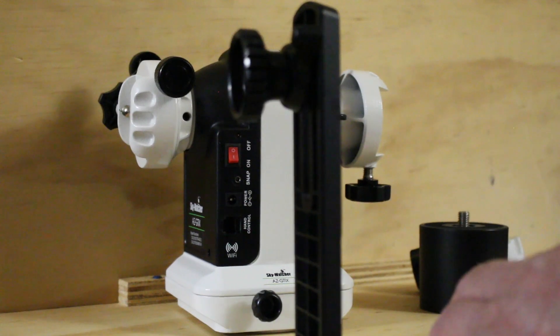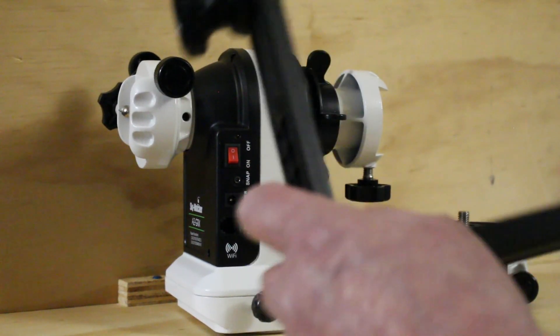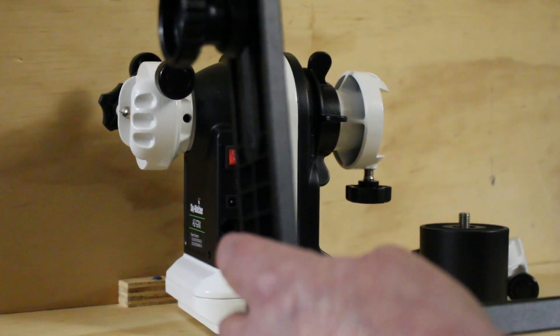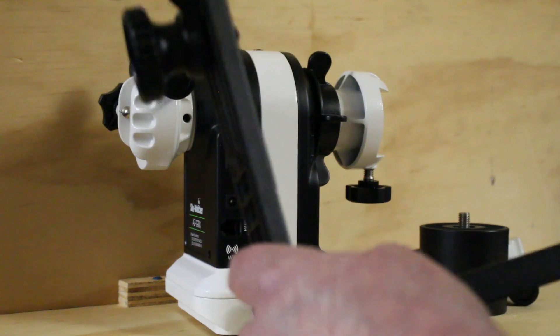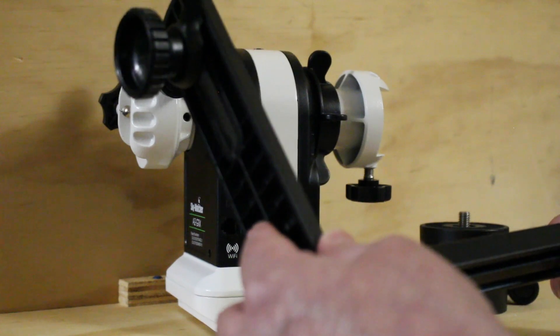But they don't tell you what size it is. This is a 45 millimeter Vixen style dovetail, but they don't tell you what size that green one is, so I might have to roll the dice and order one up and we'll see what happens with that.